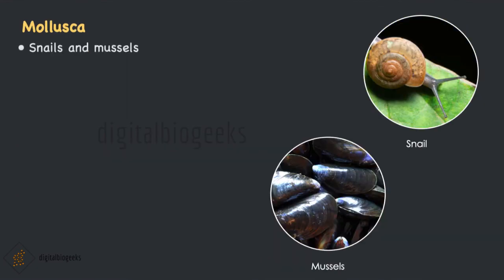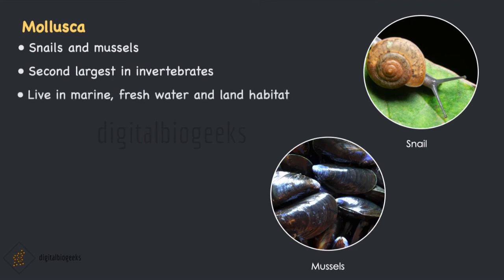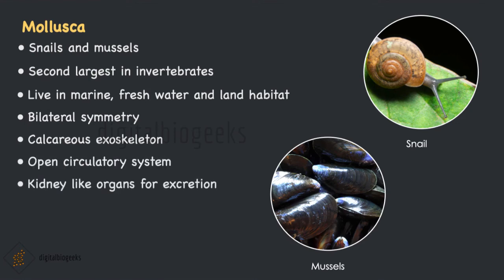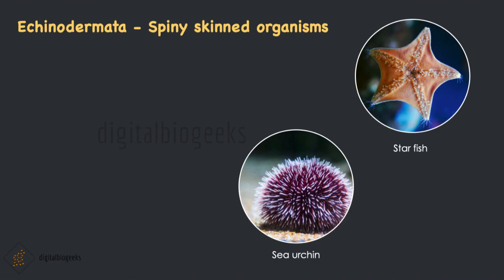Moving on to Mollusca. Examples are snails and mussels. They are the second largest group in invertebrate animals after Arthropoda. They live in marine, freshwater and land habitats. They have a bilaterally symmetrical body. They have a calcareous exoskeleton — containing calcium carbonate — which protects the internal soft body. They have an open circulatory system and kidney-like organs for excretion. There is a muscular foot which helps in moving around.